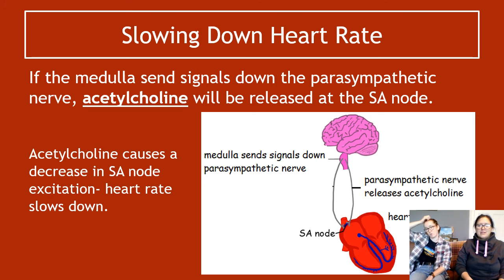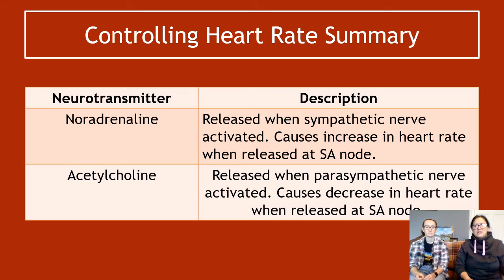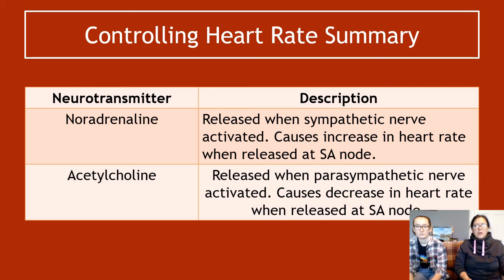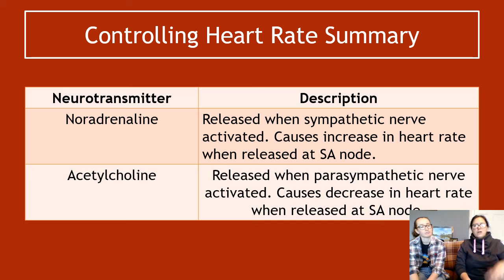To summarize: noradrenaline is released when the sympathetic nerve is activated, causing an increase in heart rate when released at the SA node. Acetylcholine is released when the parasympathetic nerve is activated, causing a decrease in heart rate when released at the SA node. That covers all of the electrical activity and heart rate control.